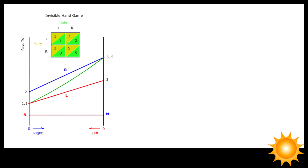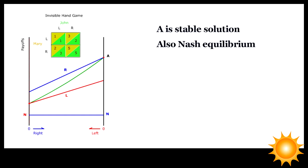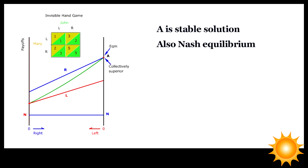The highest collective payoff occurs when everybody chooses R at point A. At this point nobody has any incentive to choose L, so A is both a collectively superior and a stable equilibrium solution. In this invisible hand game, R represents the single-minded pursuit of self-interest, and L is the abstinence from such pursuit. Because there is no conflict between individual payoff and group payoff, the invisible hand situation is strictly speaking not strategic, but it is a good benchmark to compare with typically strategic situations.